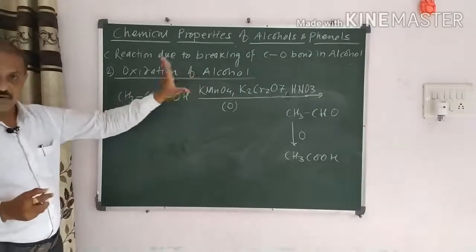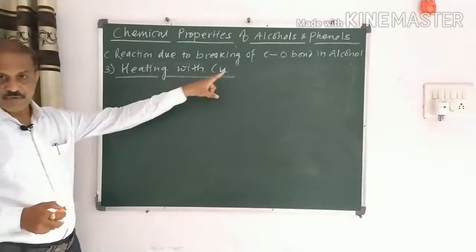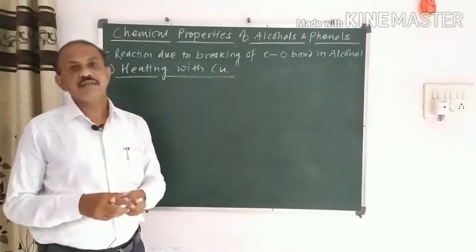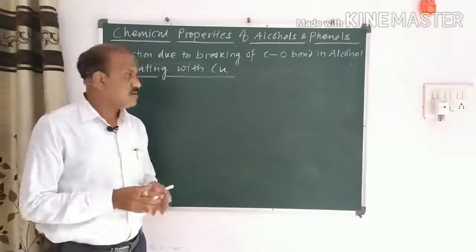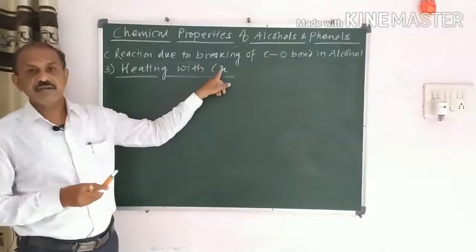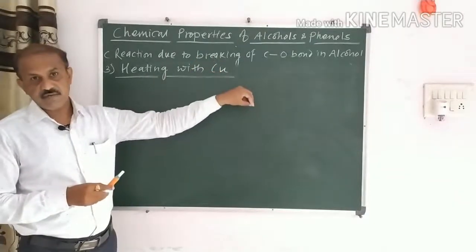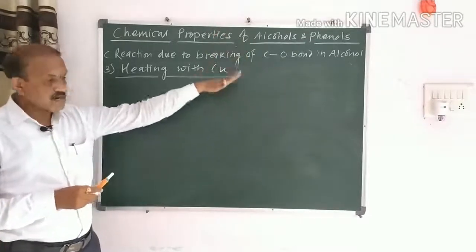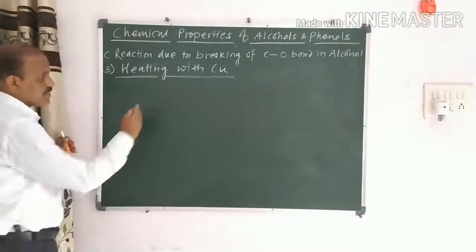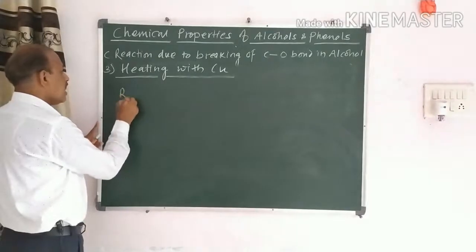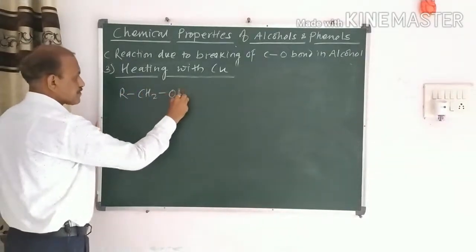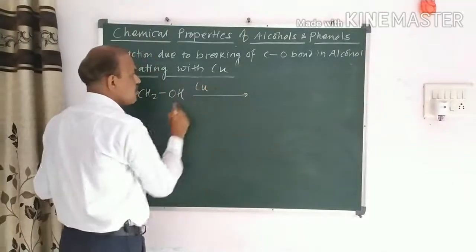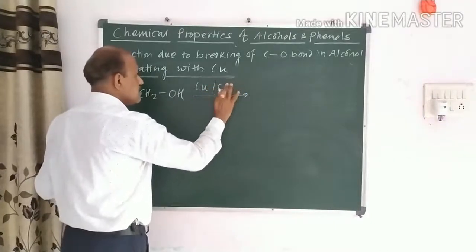Regarding the breaking of C–O bond, we also discuss heating with copper. When vapors of primary, secondary, and tertiary alcohols are passed over hot copper at 573 Kelvin, the same result as oxidation is observed — it is equivalent to oxidation. Starting with primary alcohol RCH2OH, when its vapors are passed over hot copper at 573 Kelvin, oxidation occurs.